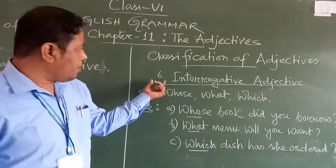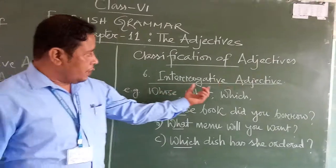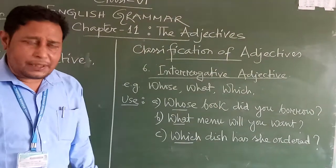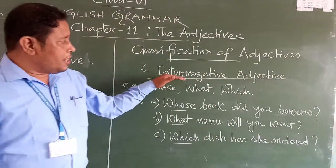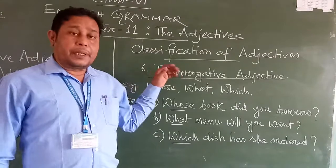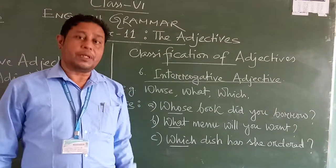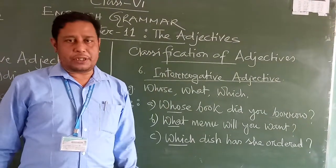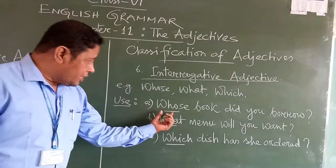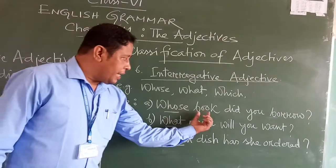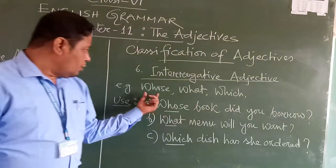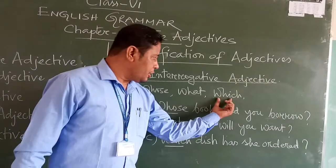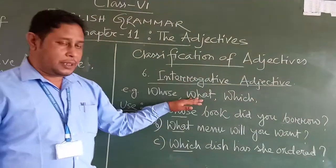Here I am explaining about interrogative adjective. What is interrogative adjective? Interrogative adjective is that adjective that asks any question, but it is followed by a noun. The words whose, what, and which are the interrogative adjectives.